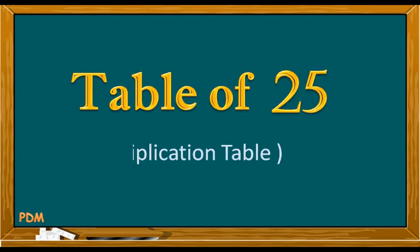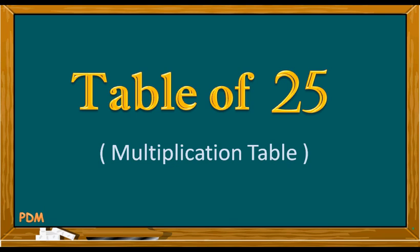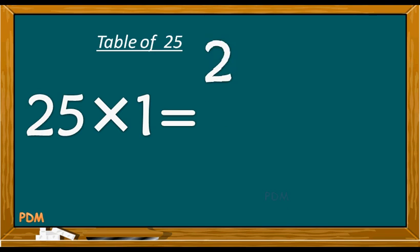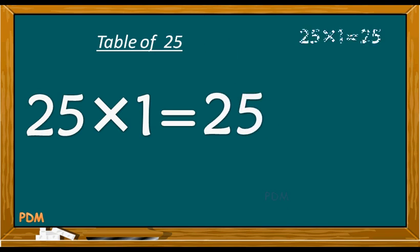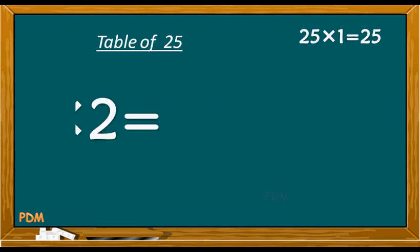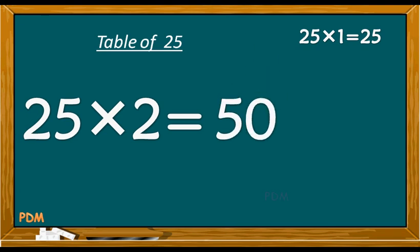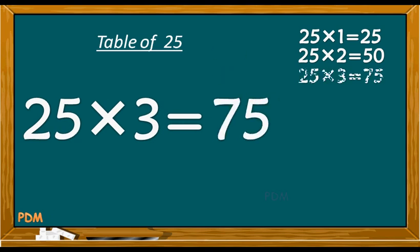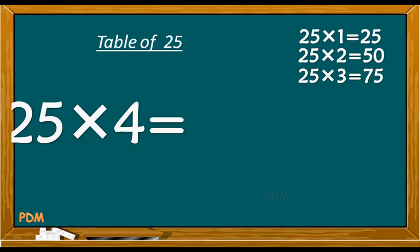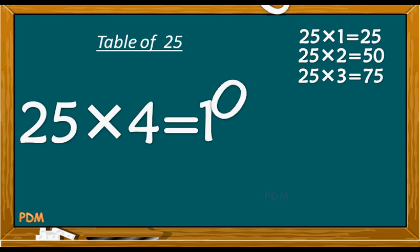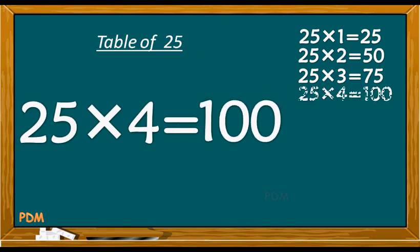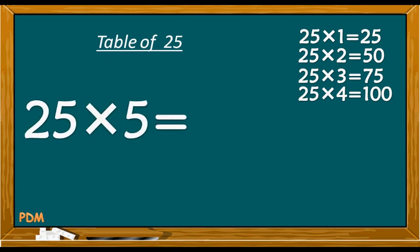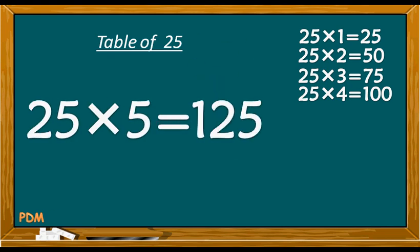Table of 25. 25 ones are 25. 25 twos are 50. 25 threes are 75. 25 fours are 100. 25 fives are 125.